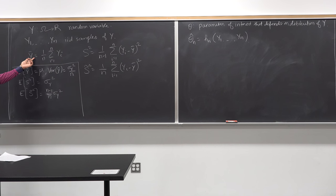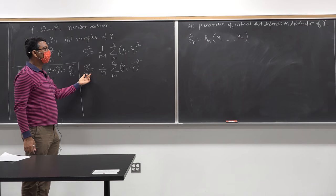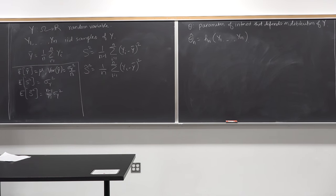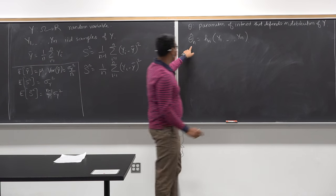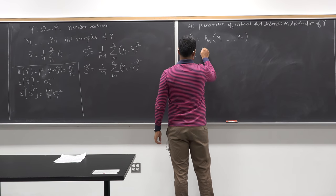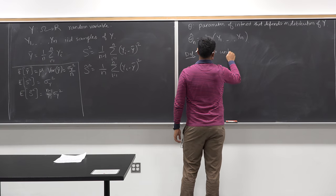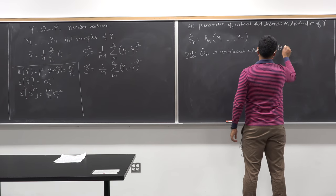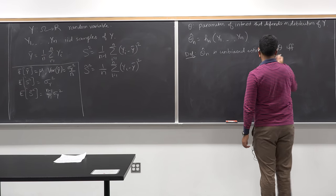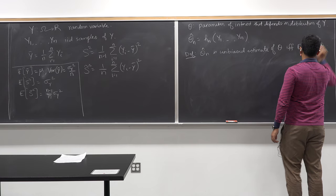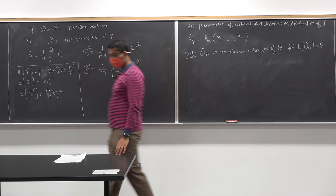Y-bar is theta-hat_n for the mean, s-squared is theta-hat_n for the variance, and s-tilde-squared is also theta-hat_n for the variance. There are two important properties to know. The first definition: theta-hat_n is an unbiased estimate of theta if and only if the expected value of theta-hat_n equals theta.